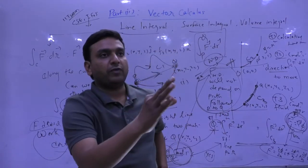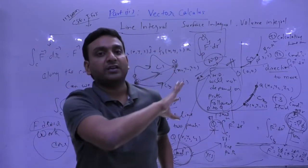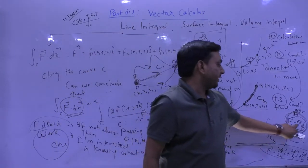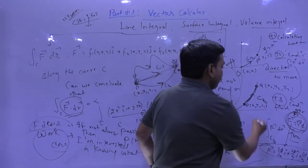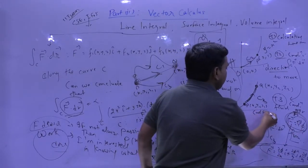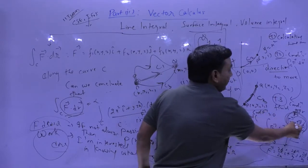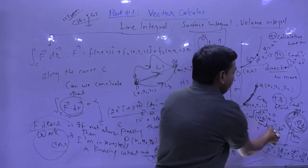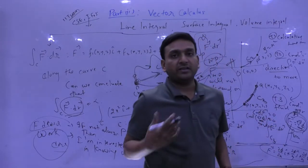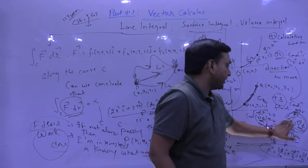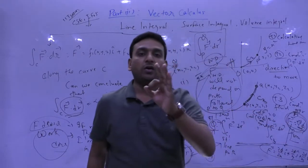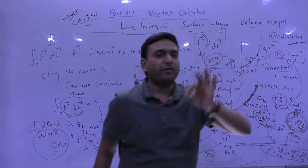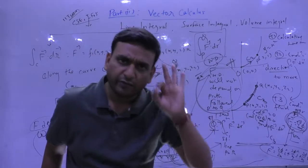The integration from P to Q of f vector dot dr vector is independent of the path chosen if f vector is of the form del φ. If f vector is of the form del φ, then f vector is conservative — meaning curl of f vector is zero. Because curl of grad φ is always zero, if f vector is of this form, then curl of f vector will always be zero, meaning f vector will always be a conservative force field.